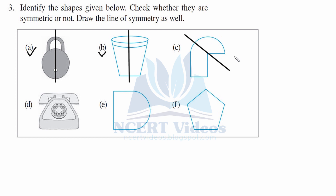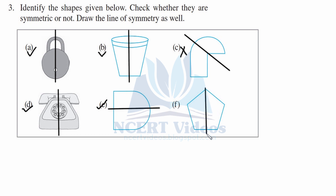Part C is a telephone — the older version from the 1980s — and this figure is not symmetrical. For any line of symmetry you choose, you will not get a mirror reflection. Part E is symmetrical, but not with a vertical line — it is symmetrical with a horizontal line of symmetry, which gives you the other part of the figure. The pentagon in part F: if we draw a vertical line of symmetry we get the other half clearly.